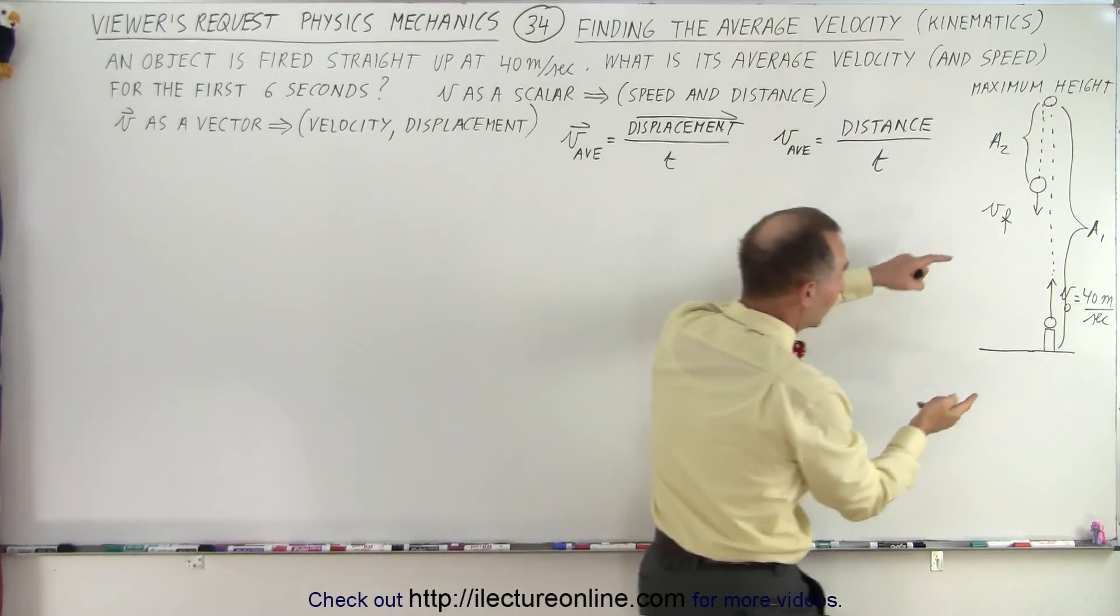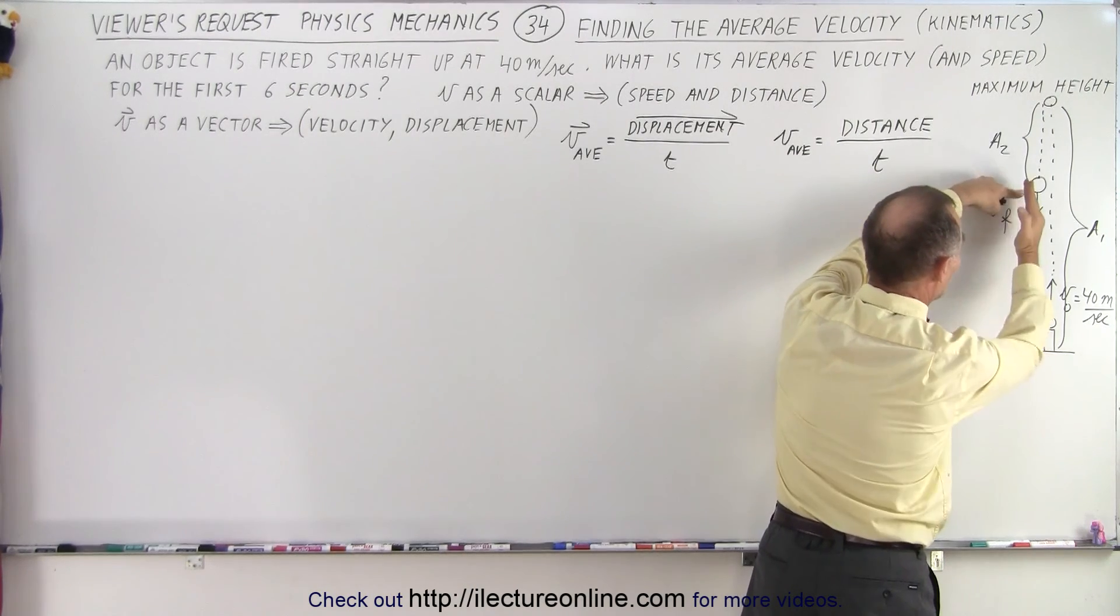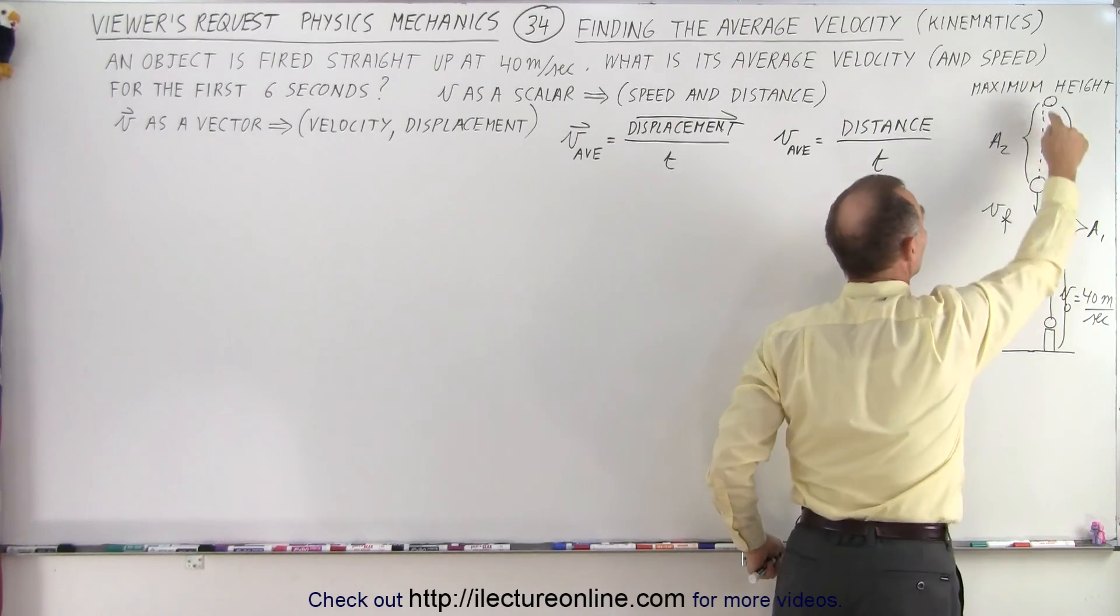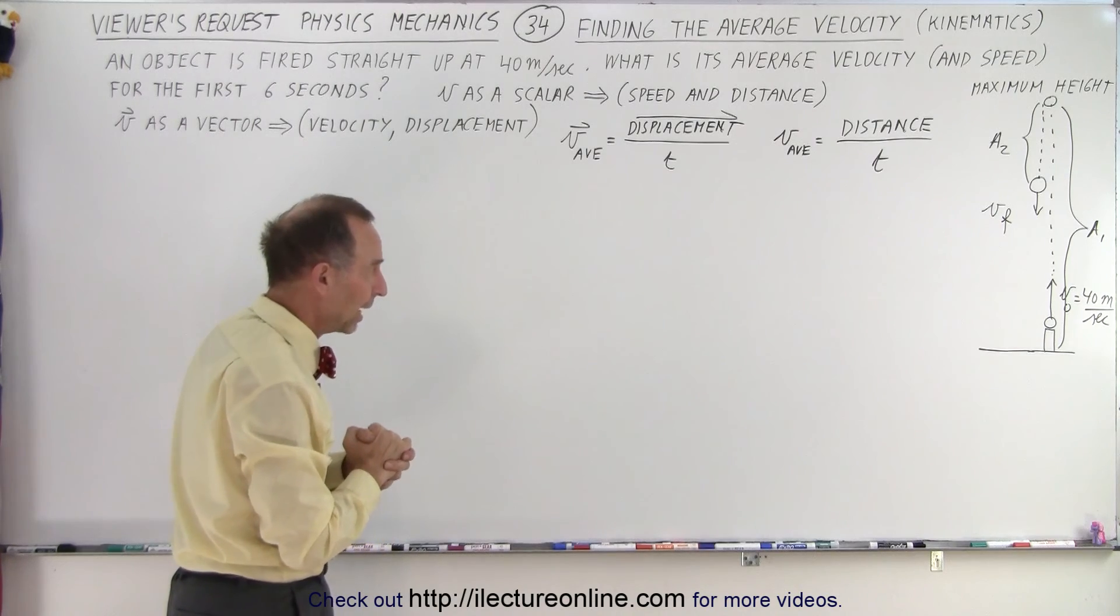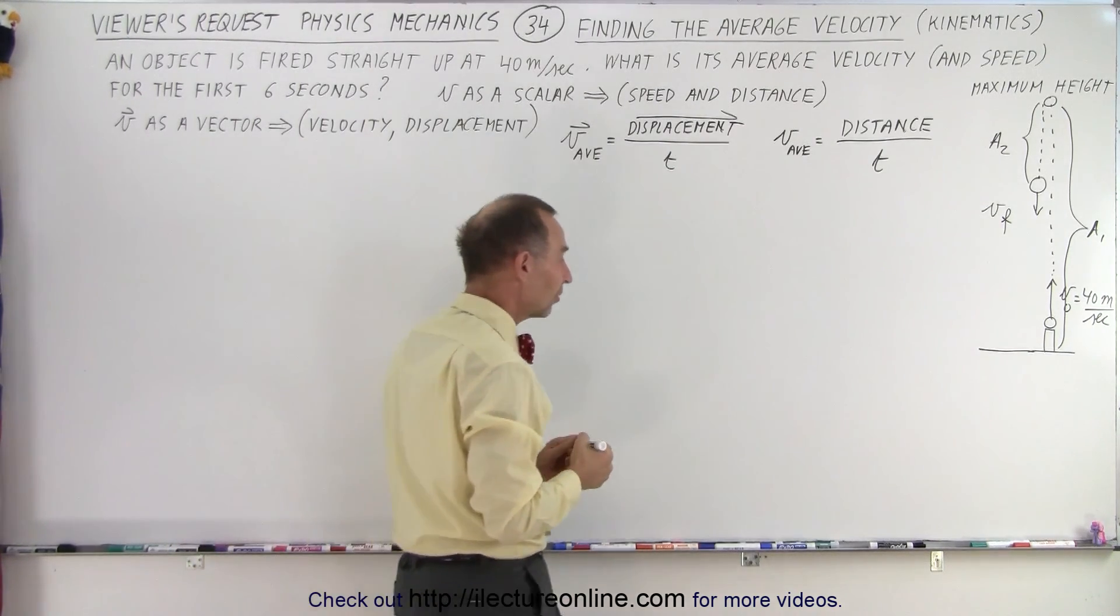Remember that the displacement is this distance right here, from here to there in an upward direction, and the total distance is from here all the way to the top and back down, those two added together. All right, let's go ahead and use equations of kinematics to solve for the average velocity.